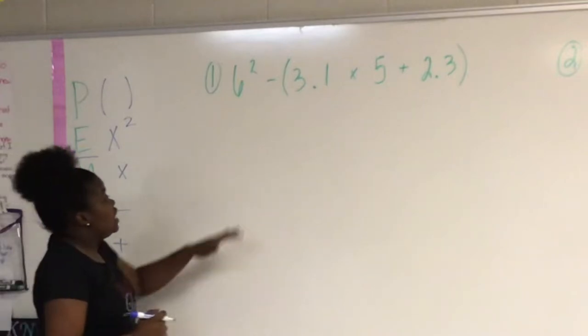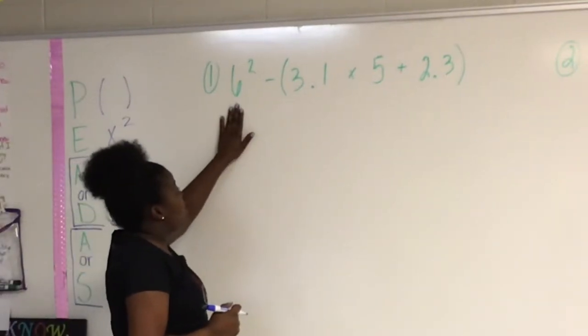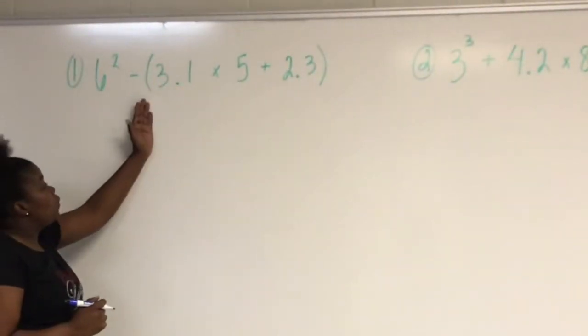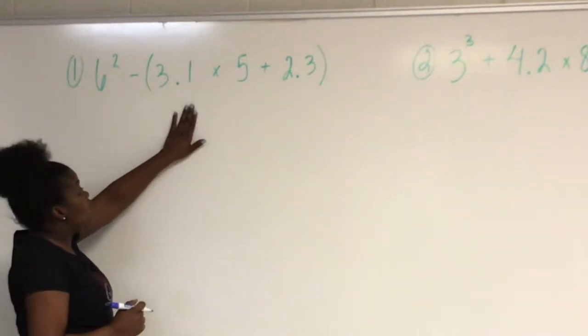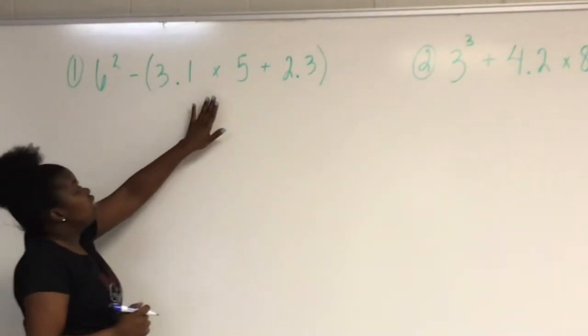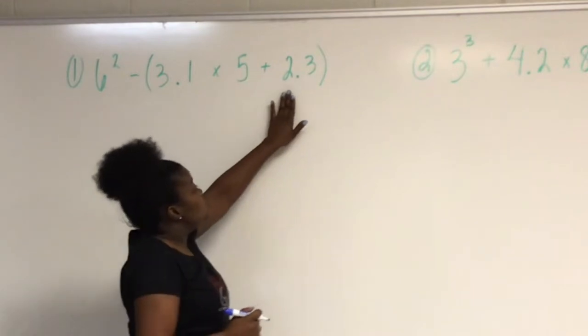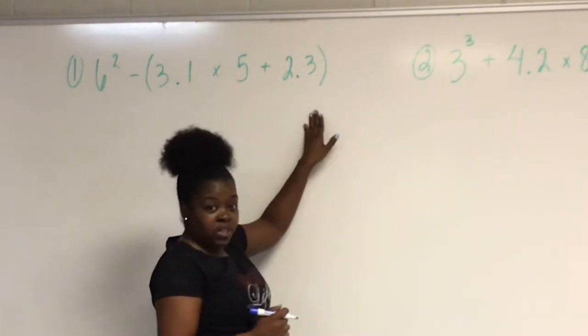Okay, first example. We have 6 squared minus, open parentheses, 3.1 or 3 and 1 tenths times 5 plus 2 and 3 tenths, close parentheses.